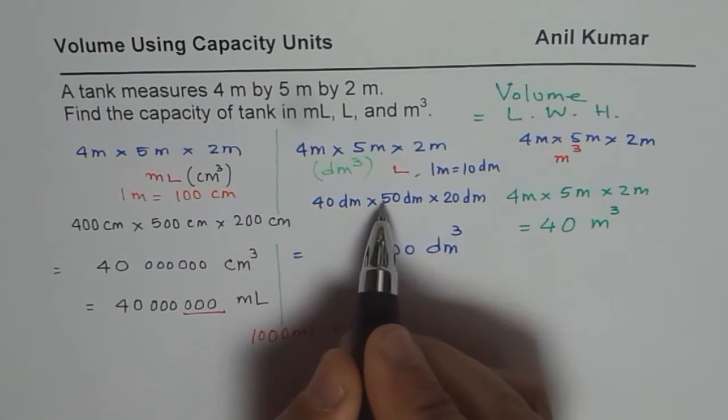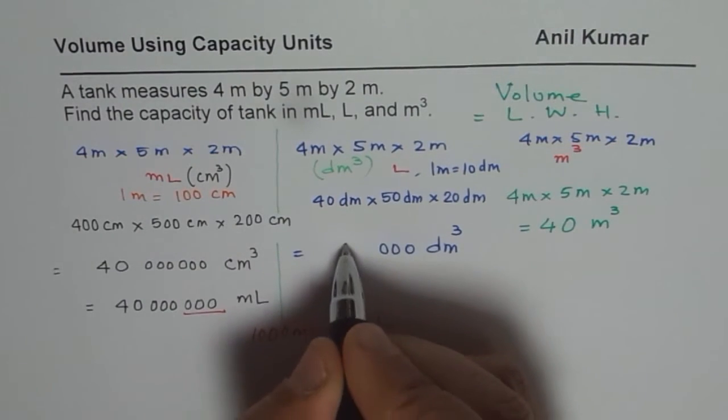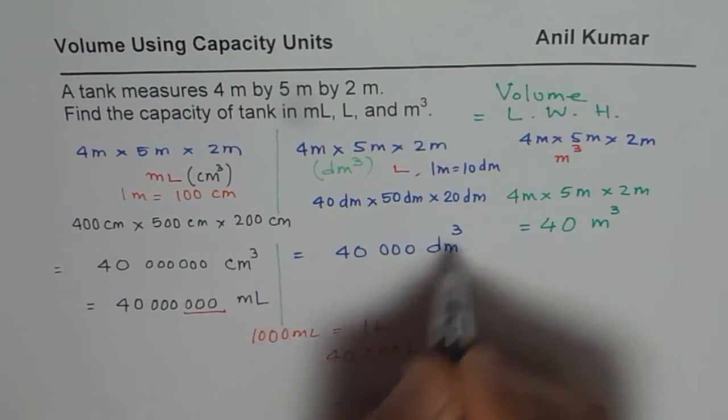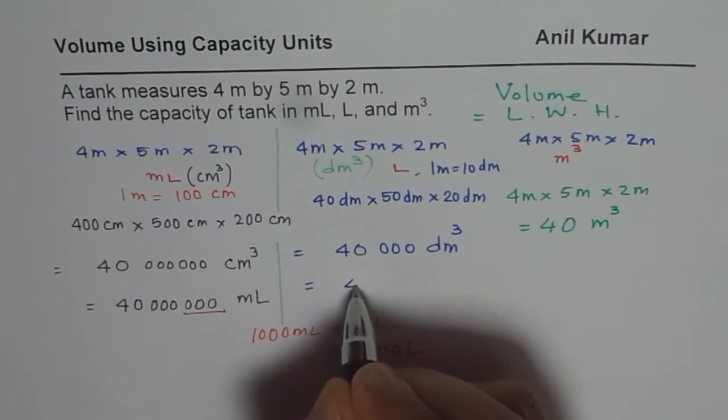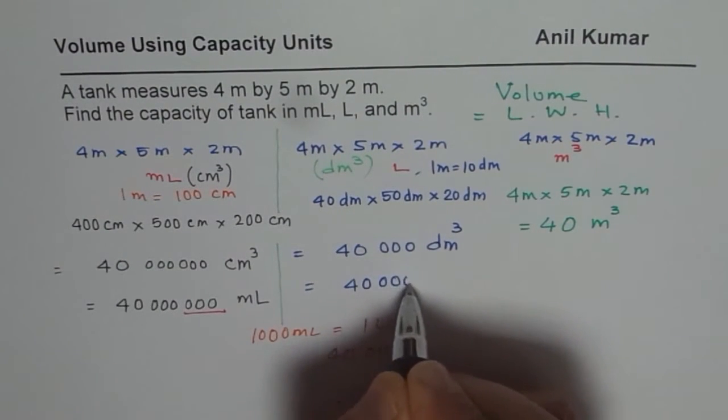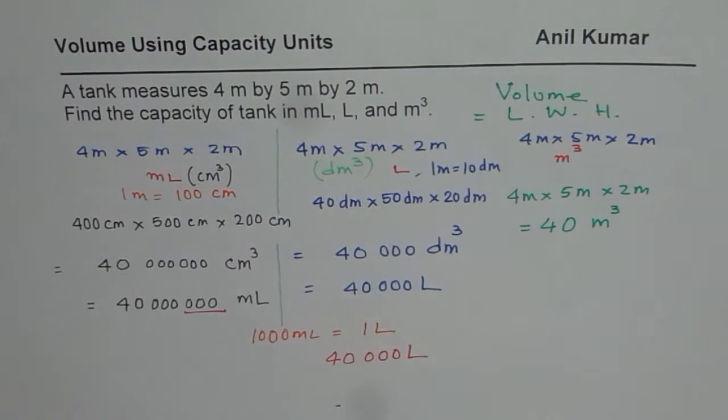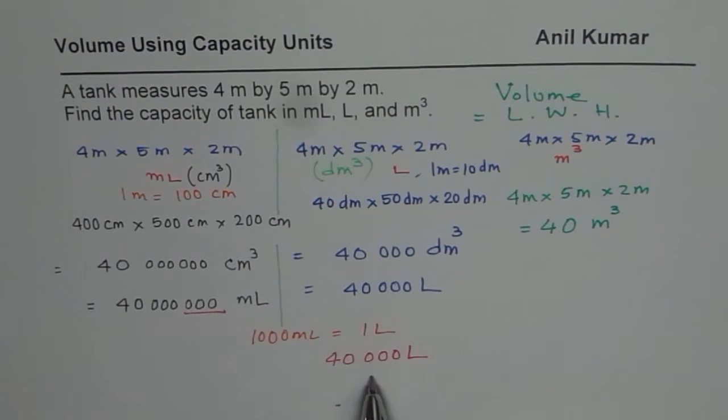4 times 5 is 20. 20 times 2 is 40. 40,000 decimetres cube or that is 40,000 liters. Remember, 1 liter is 1 decimetre cube. You get exactly the same answer.